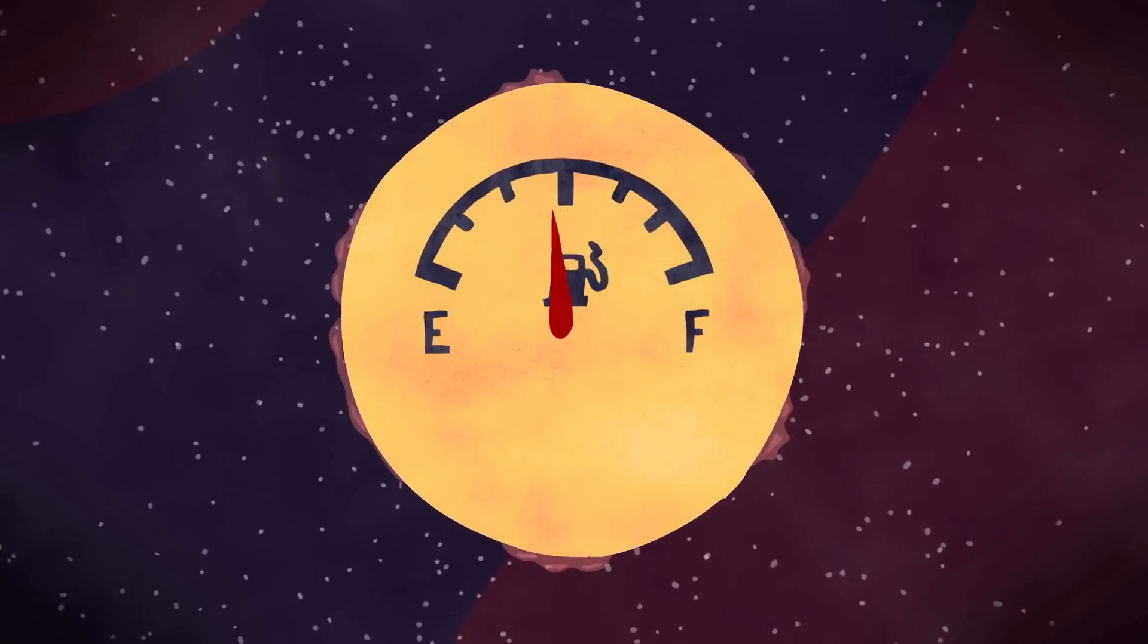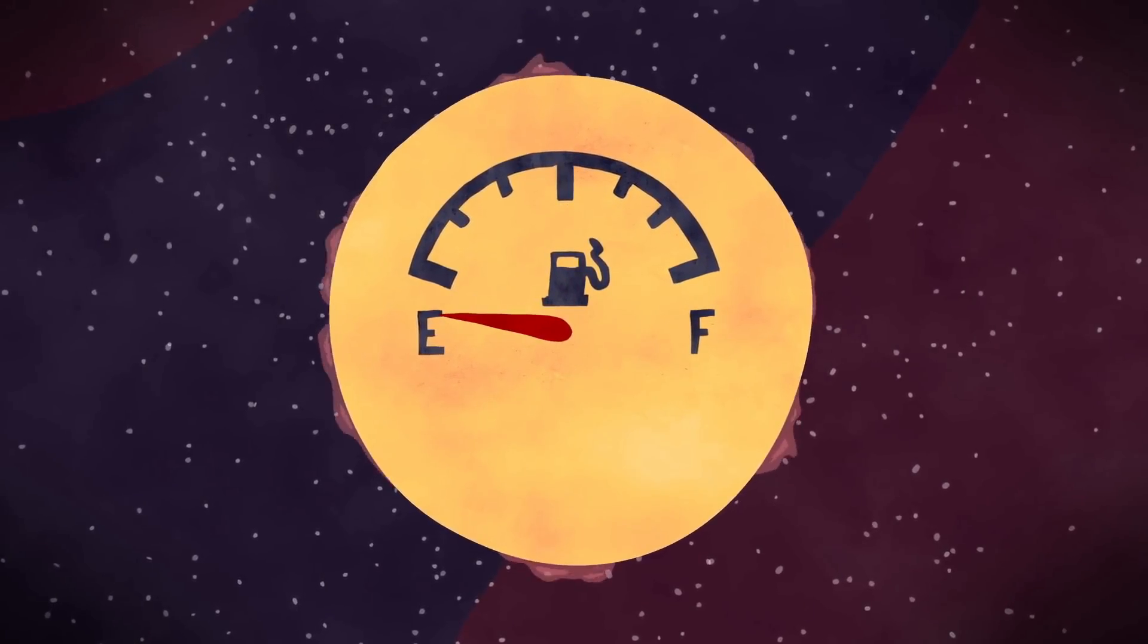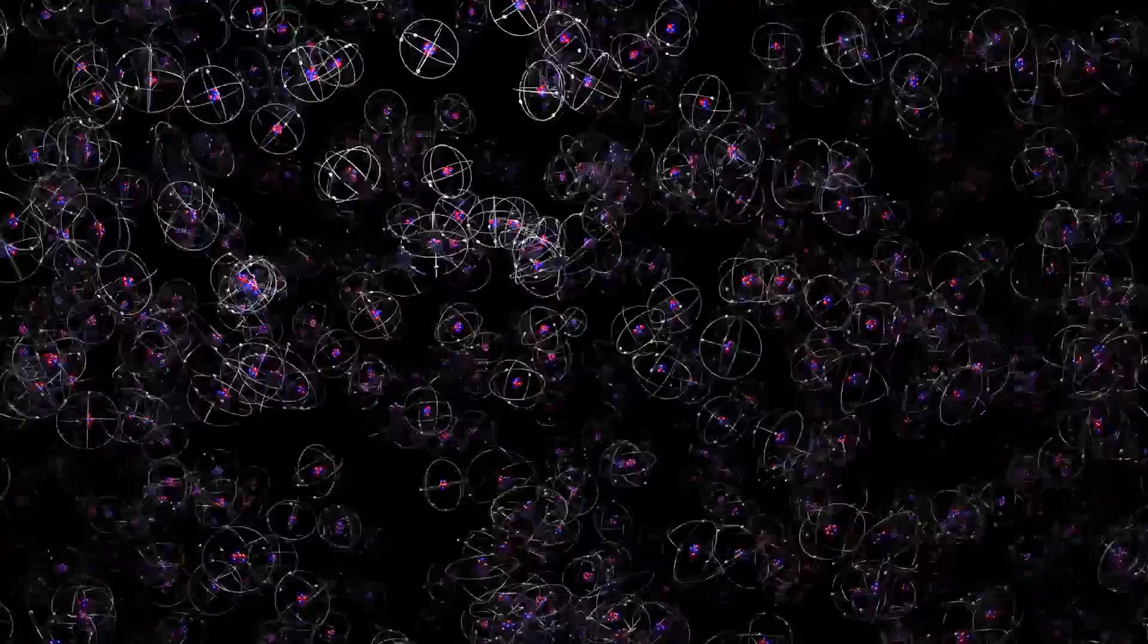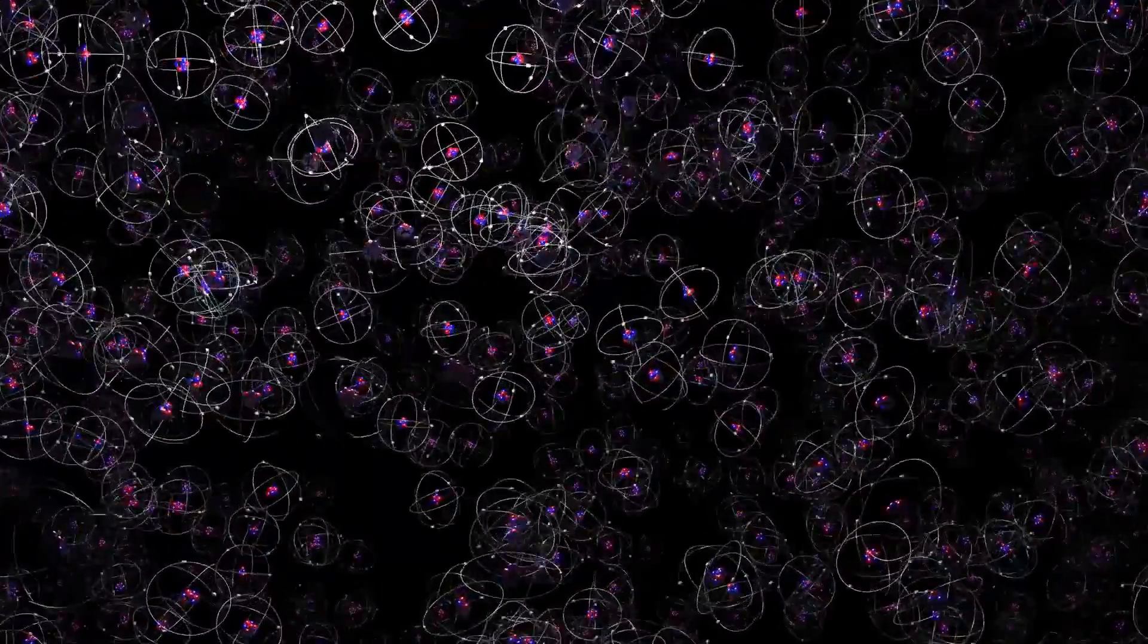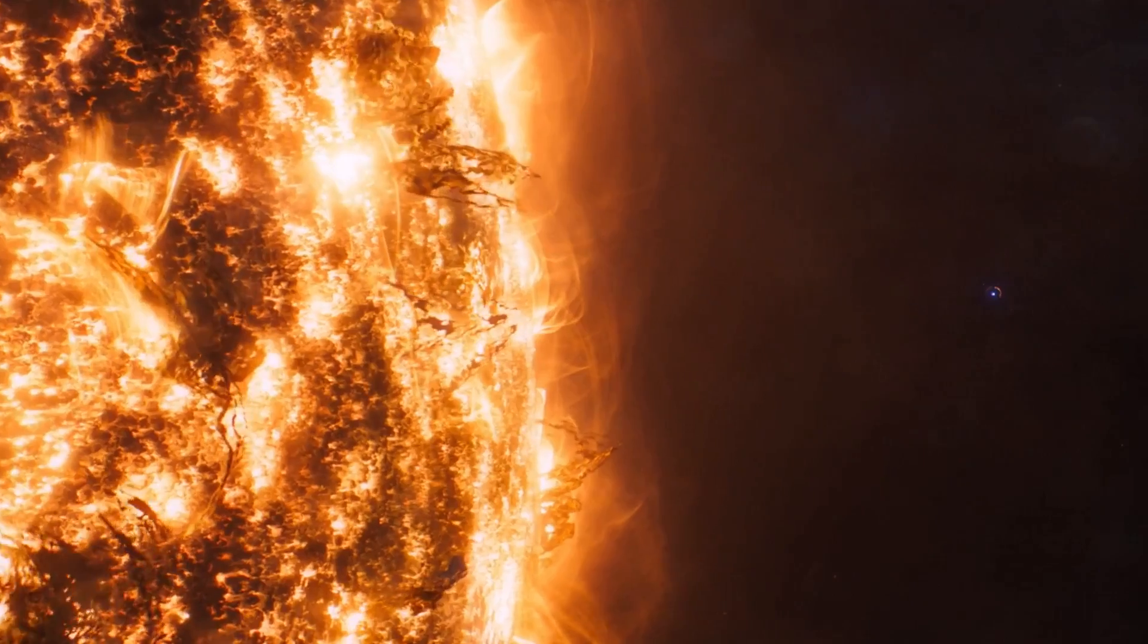Neutron stars are the stellar corpses of massive stars that have run out of fuel and exploded as supernovas. These tiny spinning objects are only a dozen or so miles wide and yet pack in the entire biomass of our Sun.